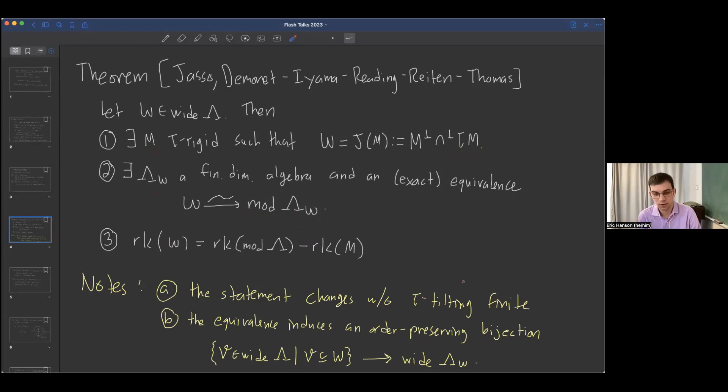Two quick notes: the way I stated this is really only true for tau tilting finite algebras. There is a statement for general algebras, but it's not exactly this one. The equivalence of categories induces an order-preserving bijection between those wide subcategories which are contained in W and the wide subcategories of this other algebra, lambda sub W.